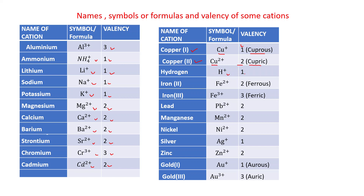Hydrogen: H+, valency is 1. Iron also has more than one valency. Iron(II): Fe2+, valency is 2, and this is called ferrous. Iron(III): Fe3+, valency is 3, and this is called ferric.